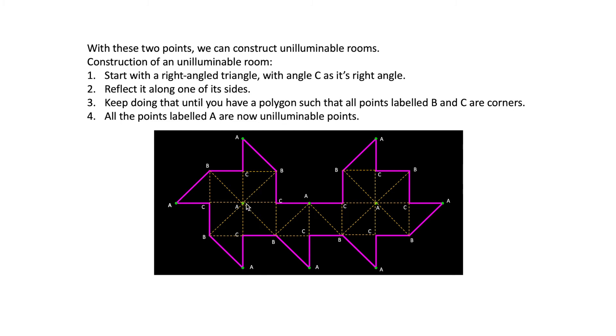So if you put a point source of light at any of those points, it won't be able to reach any of the other points after reflecting off the walls.